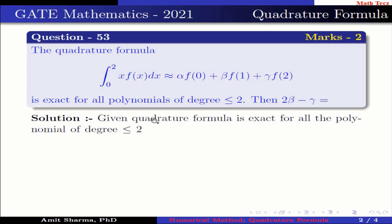Given that the Quadrature formula is exact for all polynomials of degree less than or equal to 2, this implies we have to apply the formula for f(x) = 1, f(x) = x, and f(x) = x².